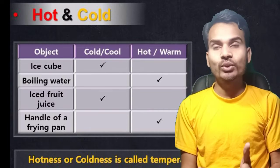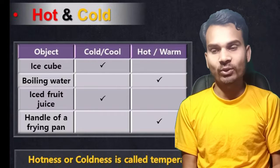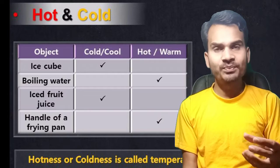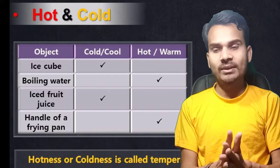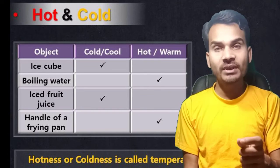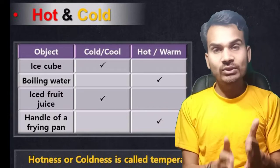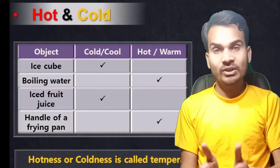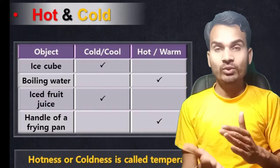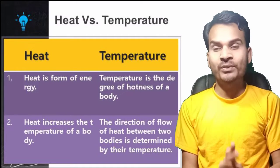Let's compare some objects — what is cold or hot? An ice cube is cold. Boiled water is warm. Iced fruit juice is cold. The handle of a frying pan is hot. We can compare these: the handle of a frying pan may be hotter or less hot than boiling water. Temperature tells us the degree of hotness or coldness of these objects.